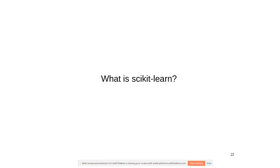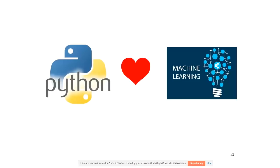Let's take a step back and talk about what scikit-learn is. Scikit-learn is a machine learning library for Python — a tool that helps you write machine learning models using Python. You need to program to use it; there's no GUI. It's not written entirely in Python, but it can only be used from Python.